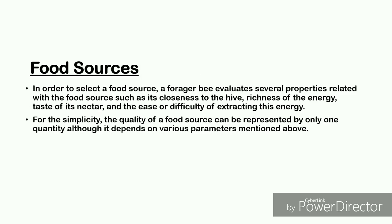Regarding Food Sources: in order to select a food source, a forager bee evaluates several properties related to a food source, such as its closeness to the hive, richness of energy, taste of its nectar, and the ease or difficulty of extracting this energy. For simplicity, the quality of a food source can be represented by only one quantity, although it depends on the various parameters mentioned above.